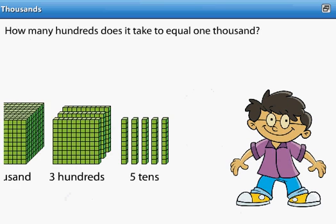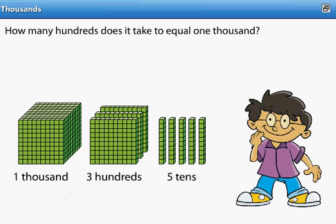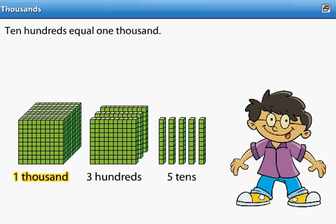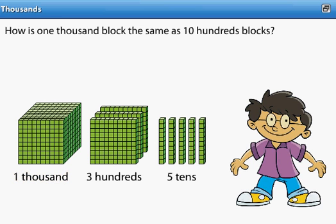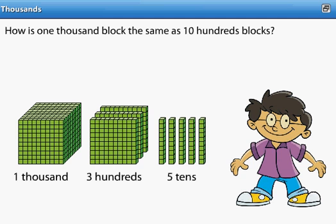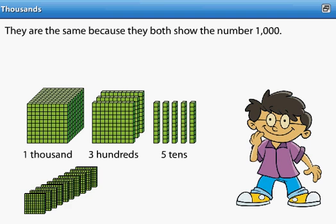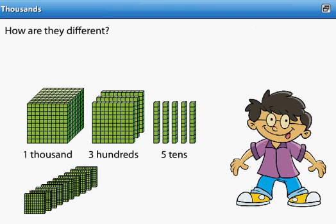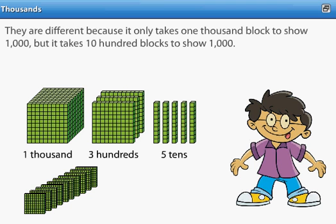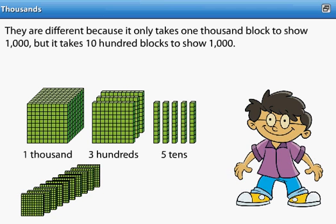How many hundreds does it take to equal 1,000? Ten hundreds equal 1,000. How is a 1,000 block the same as 10 hundreds blocks? They are the same because they both show the number 1,000. How are they different? They are different because it only takes 1 thousand block to show 1,000, but it takes 10 hundred blocks to show 1,000.